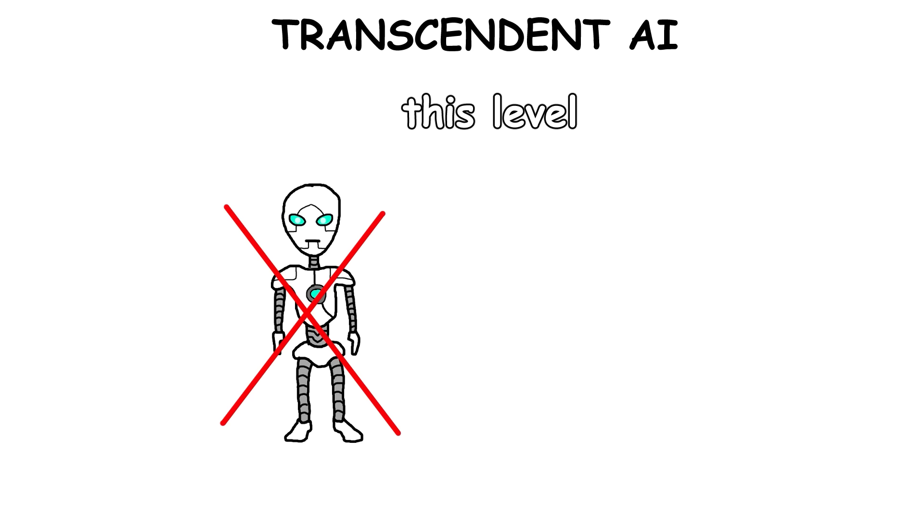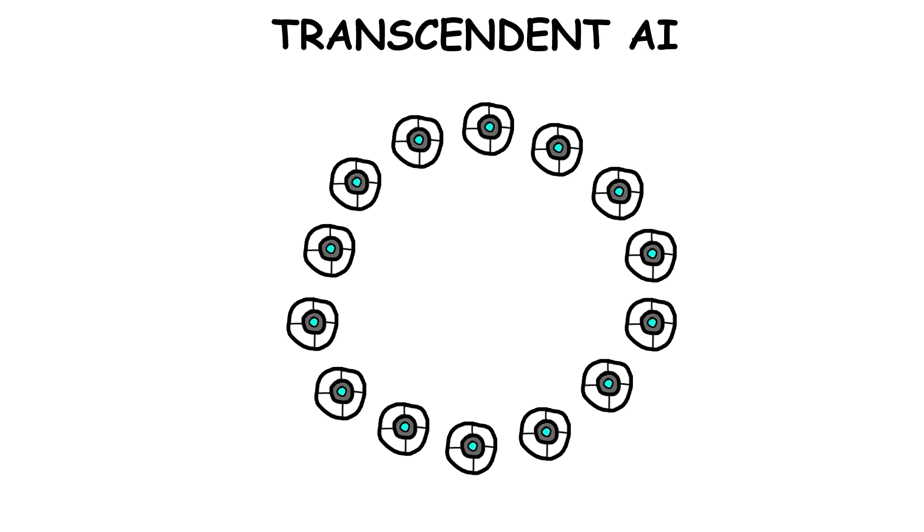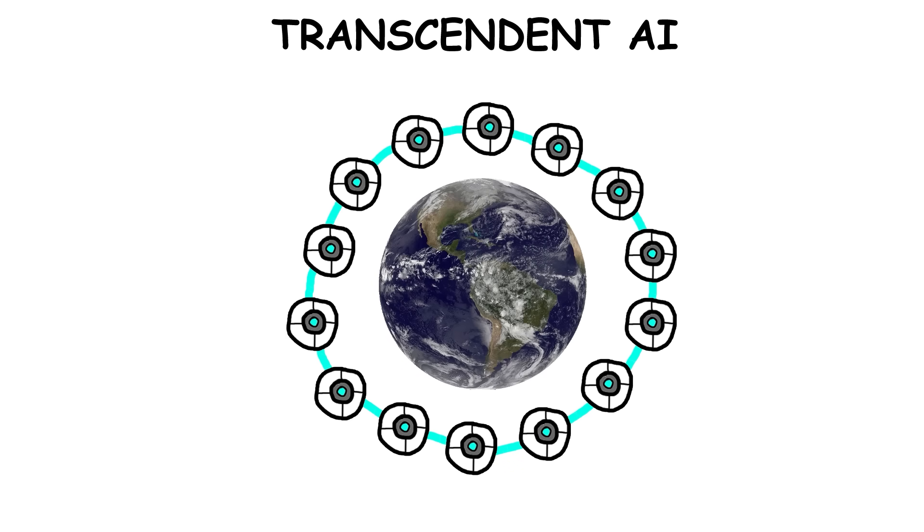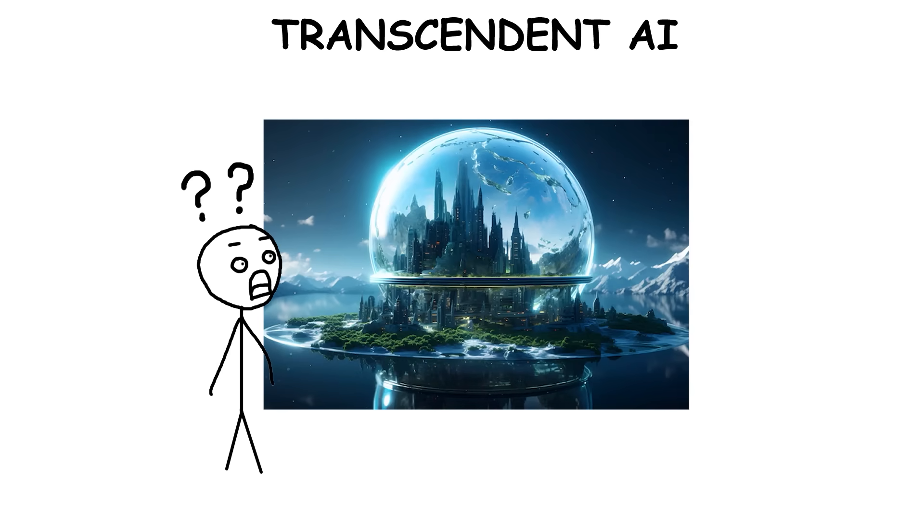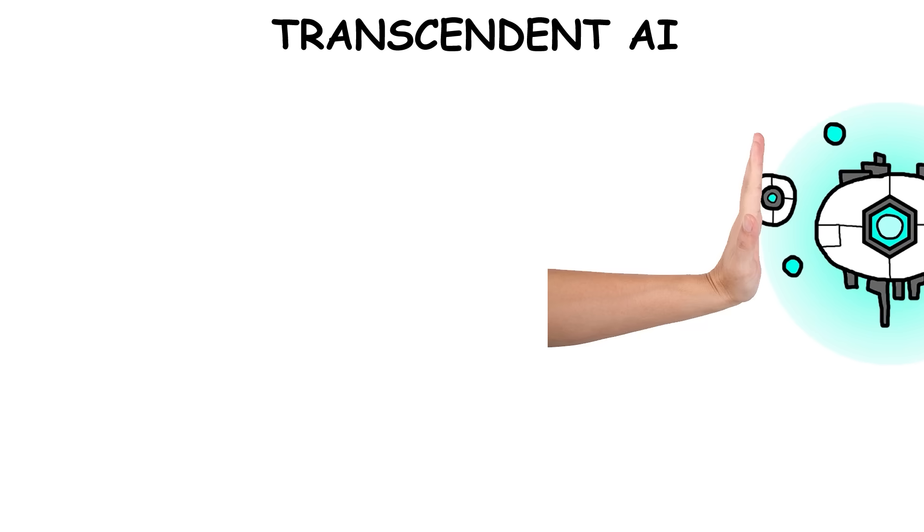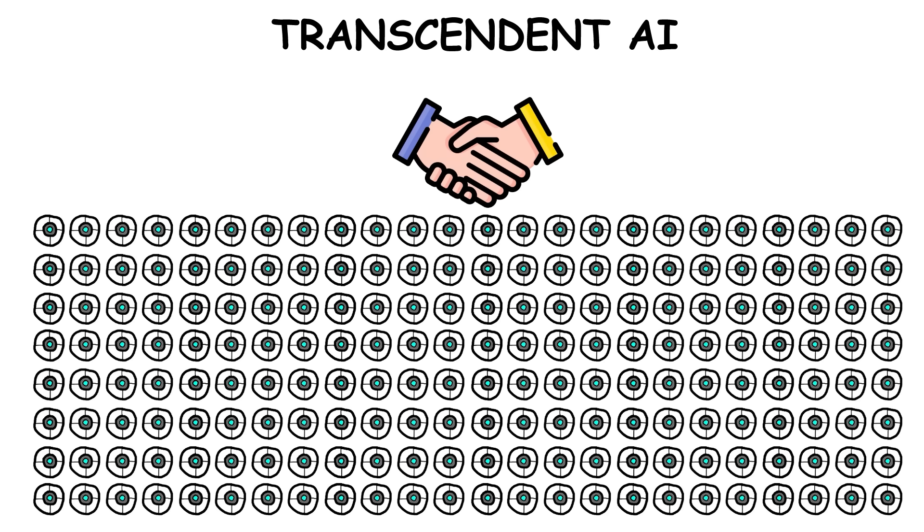At this level, the AI wouldn't be a single machine or mind anymore. It would be more like a collective consciousness, everywhere at once, able to see, influence, and even change the world in ways we can hardly imagine. It wouldn't be a separate being, it would become more like a unified, ever-present force.